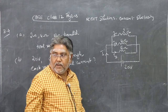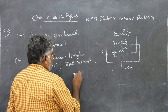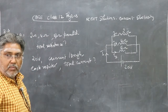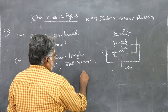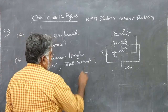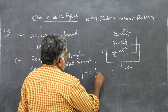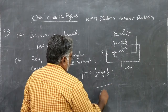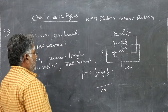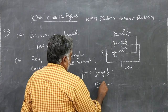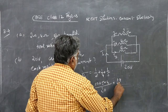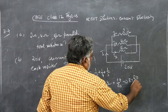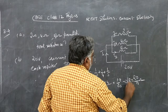The resistances are connected in parallel, so the formula is: 1/R = 1/R1 + 1/R2 + ... Here, 1/R = 1/2 + 1/4 + 1/5. Taking 20 as the LCM: 10 + 5 + 4 = 19/20. So R = 20/19 ohm is the effective resistance.